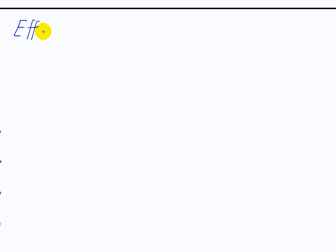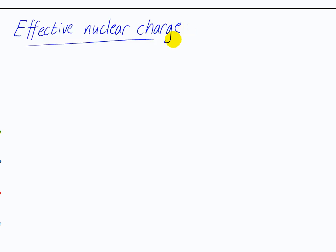Let me introduce the term effective nuclear charge. This is what we're talking about when we talk about these effects — how much of a nuclear charge do the outermost electrons actually feel? It's got a simple equation: effective nuclear charge equals the actual nuclear charge minus the charge screened by other electrons.